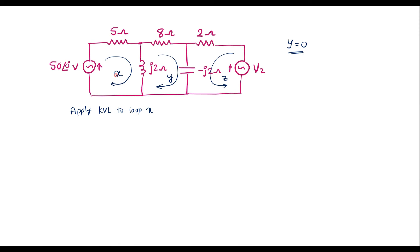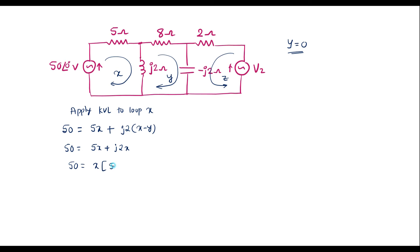Now apply KVL to loop x. This is the voltage source — keep the voltage source on the left hand side. So, 50 is equal to voltage across 5 ohm resistor which is 5x, plus voltage across inductive reactance which is j2 into (x minus y). Since y equals 0, I can write 50 equals 5x plus j2x, which gives 50 equals x(5 plus j2). Therefore, x equals 50 divided by (5 plus j2). Let me call this equation 1.